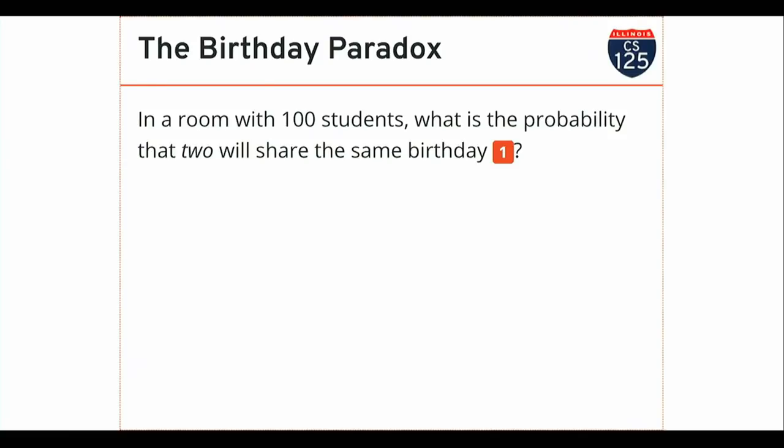Let's talk about collisions and how much of a problem they're going to be — and this brings us to a famous piece of mathematics, the birthday paradox. A room with a hundred students: what is the probability that two of them have the same birthday? What's a naive guess? There are 365 days in the year, I've got a hundred students, so you might think it's about a third. Turns out it's 99.99999% — it is almost one.